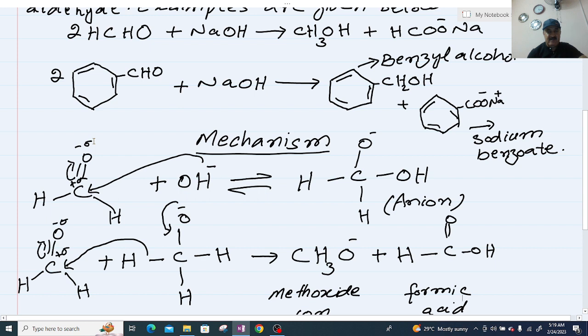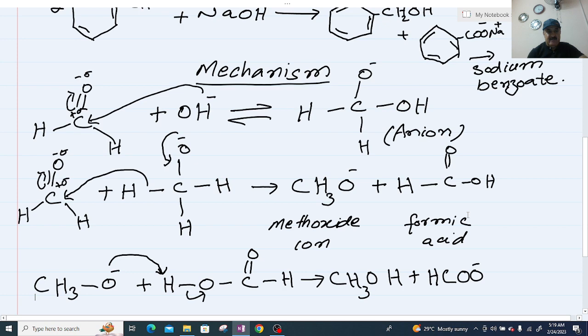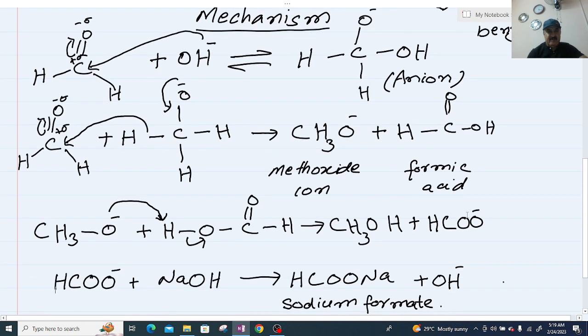The double bond between carbon and oxygen, one of the bonds breaks down and forms an anion. This anion further attacks formaldehyde and it forms methoxide ion and formic acid.